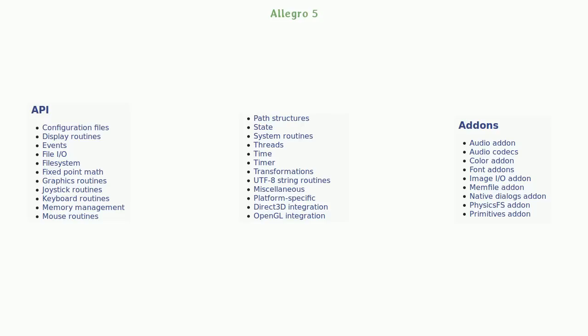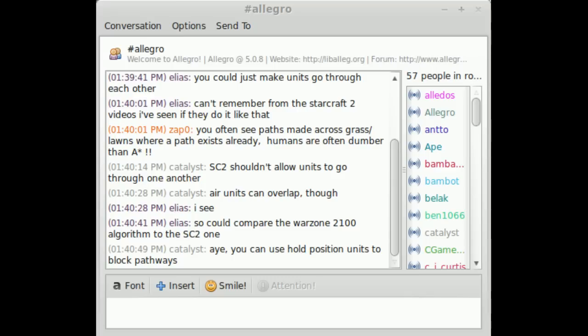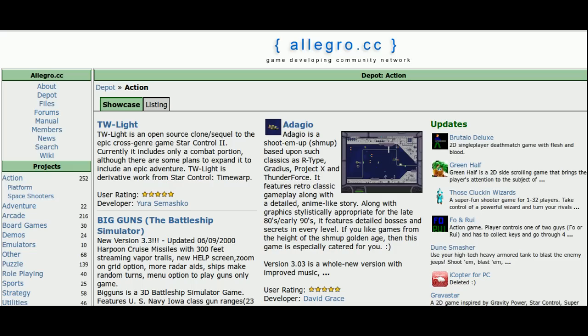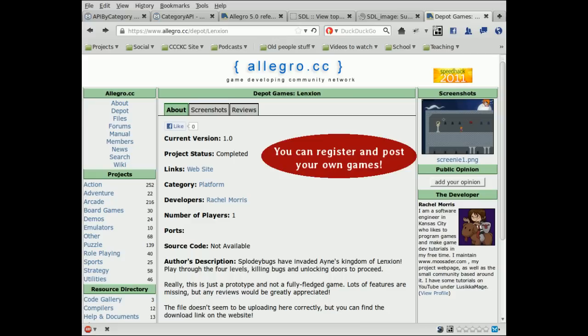You can also hook Allegro 5 in with either OpenGL or Direct3D for your 3D rendering, and Allegro 5 currently supports iPhone, and the next version is going to support Android. The IRC community on Freenode is a great channel — it's usually pretty active and most people are friendly. There's also an Allegro forum on the Allegro.cc website, and Allegro.cc has a nice directory of games made with Allegro.